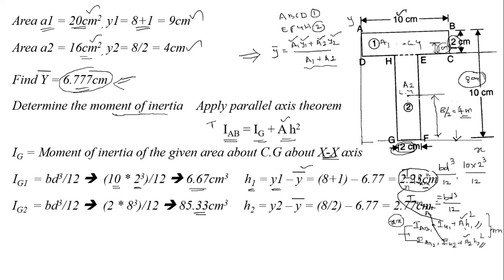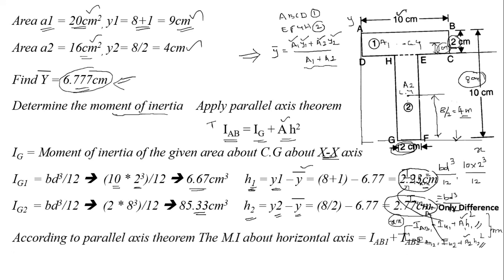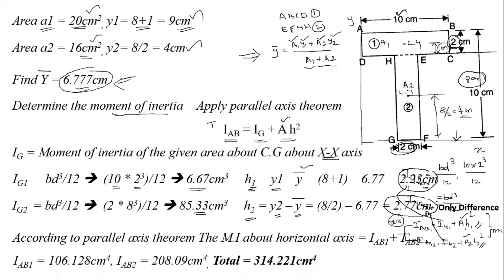Substituting the values: IAB1 = 106.128 cm⁴. The sum of IAB1 and IAB2 gives the total moment of inertia about the XX axis = 314.221 cm⁴.